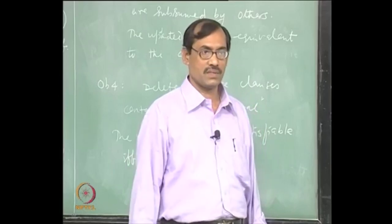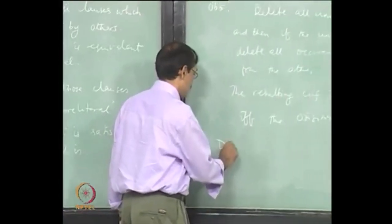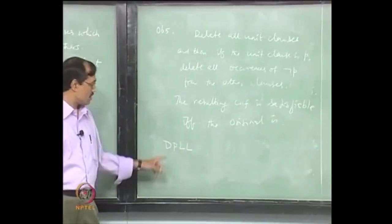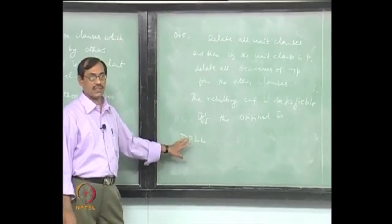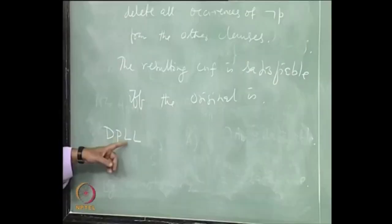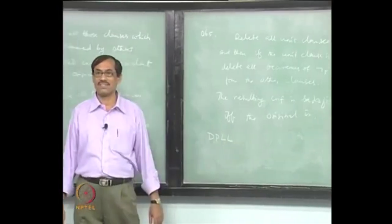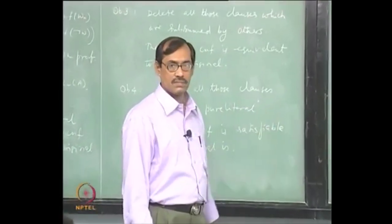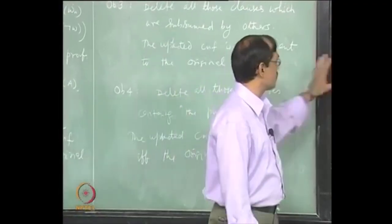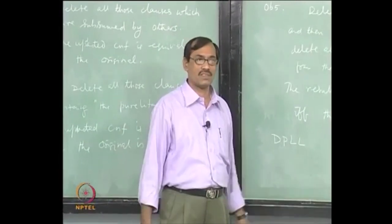That is one of the other procedures. That is called the DPLL procedure. In fact, the Davis-Putnam procedure was written first for first-order logic, not for propositional logic. Later, Logemann and Loveland revised it and that became the DPLL algorithm for propositional logic. It does not use resolution, but if you use these two heuristics along with resolution, it is really efficient. Most of the cases are solved very easily.